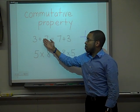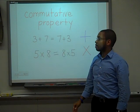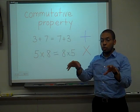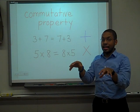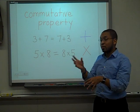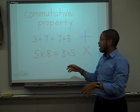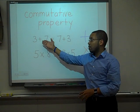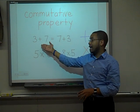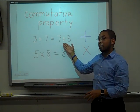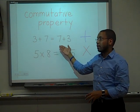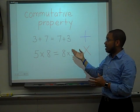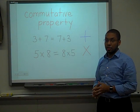For example, I have 3 plus 7. Can I also switch the order of those addends — which are numbers that you use to add — and say 7 plus 3? 3 plus 7 is 10, and 7 plus 3 is 10. 10 is equal to 10, so as we can see, the sum doesn't change.